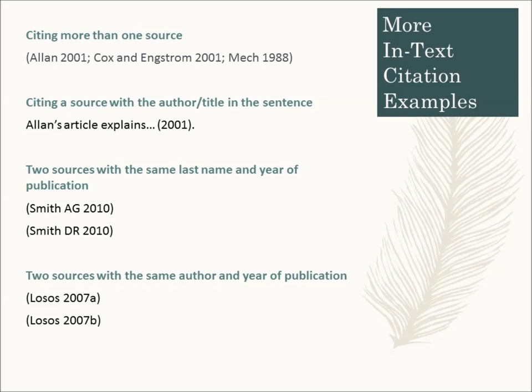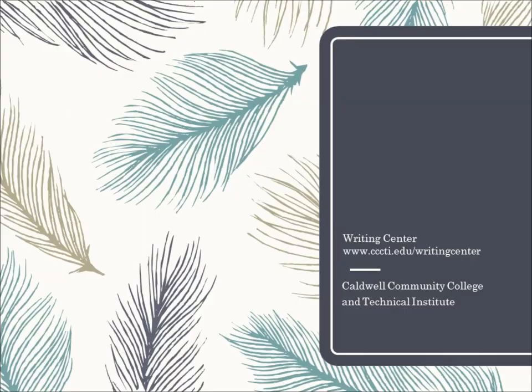Here are a few more examples of different in-text citations. If you need to cite more than one source in one in-text citation, simply connect the citations by semicolons. If you use the author's last name in the sentence, there's no reason to include it again in the in-text citation — just use the year of publication in parentheses. If you happen to have two sources with the same last name, include the author's initials in-text. If you use two sources by the same author that happen to have the same publication year, use lowercase letters to differentiate the sources.